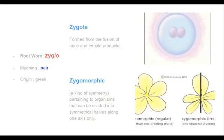The next root word is 'zygo', which means 'pair'. This is of Greek origin. Zygote is the cell which is formed from the fusion of male and female nuclei, and it is formed during the reproductive process.